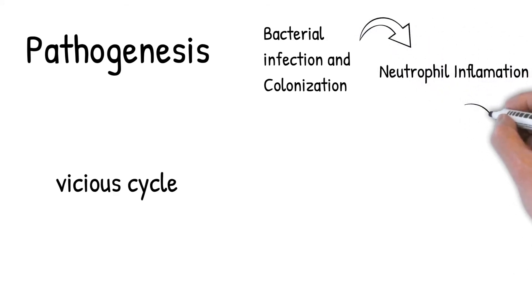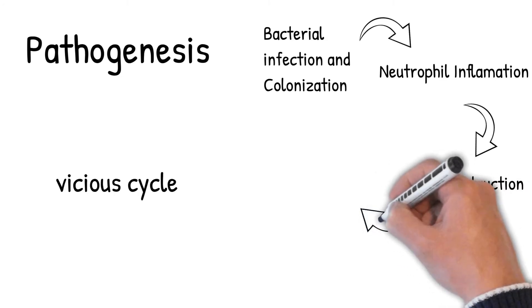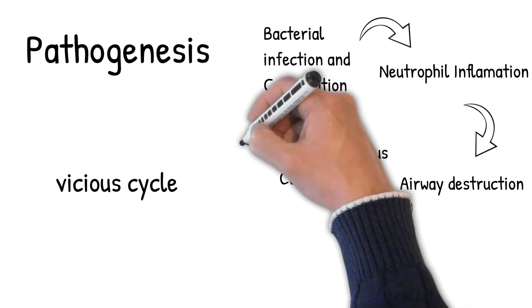The vicious cycle theory is the generally accepted explanation for the pathogenesis of bronchiectasis. In this model, a predisposed individual develops an excessive inflammatory response to pulmonary infection or tissue injury.